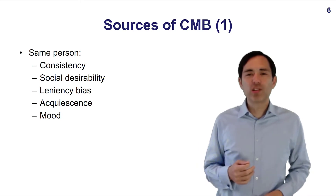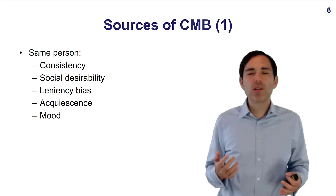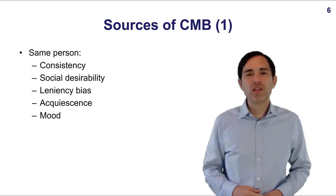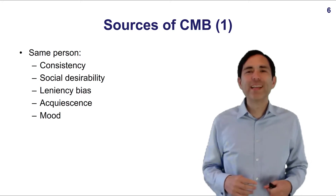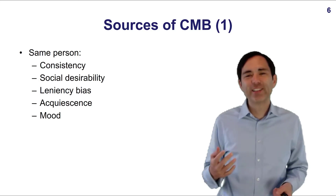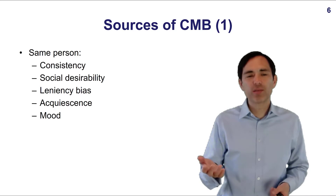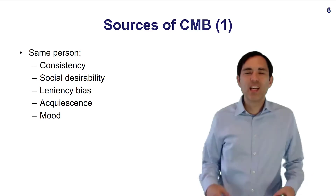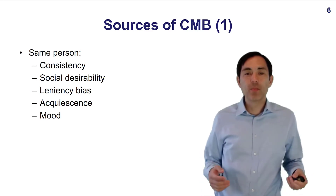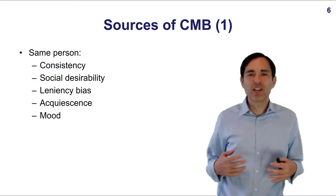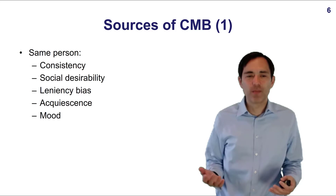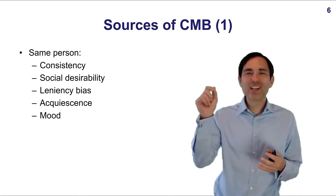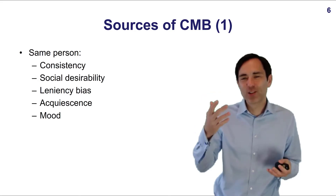Another problem would be social desirability — some people respond in a way they think is expected from them socially, or maybe from the person sitting next to them. Another problem is leniency bias: some people tend to give rather high scores, and that continues throughout the survey — again relating to consistency. Another problem can be acquiescence, meaning respondents respond in the way they think is suggested by the survey. Mood could also influence the results — if I'm very happy, maybe I always select highly satisfied, or the opposite.